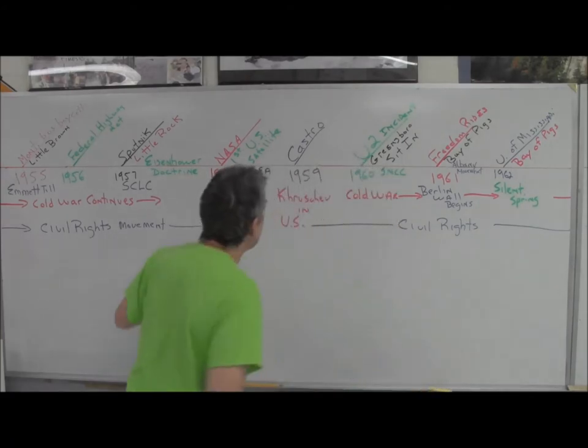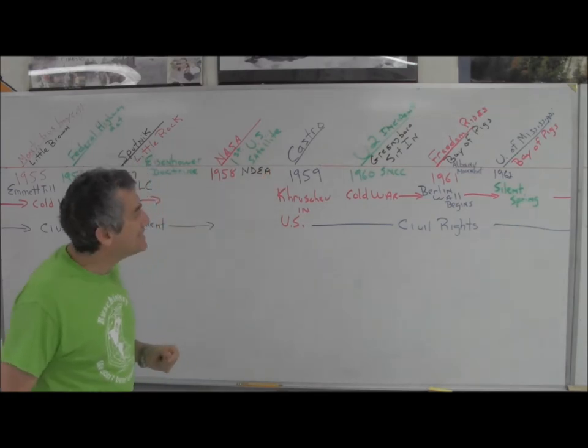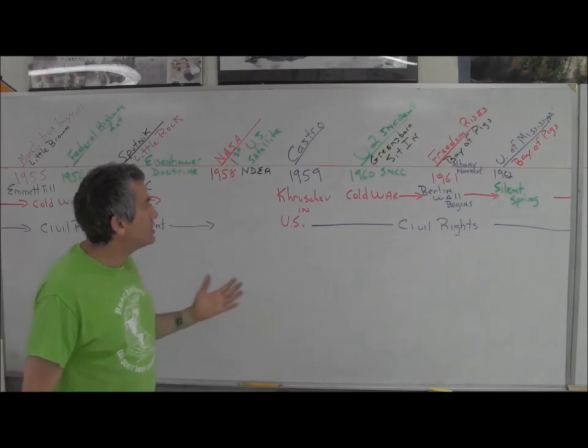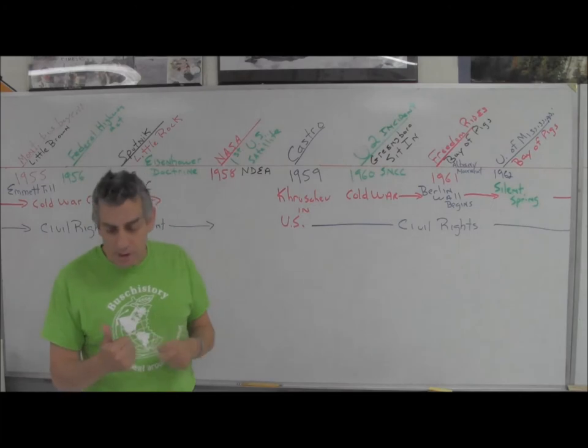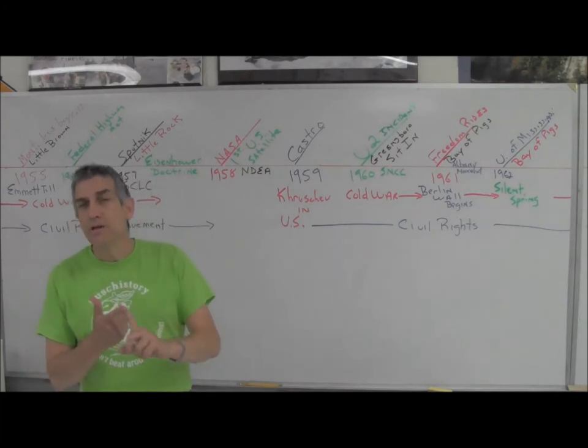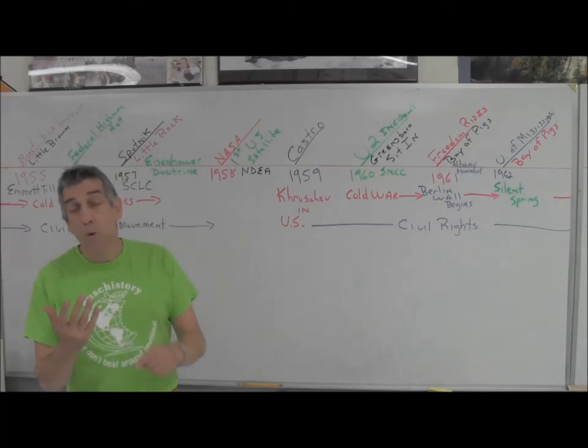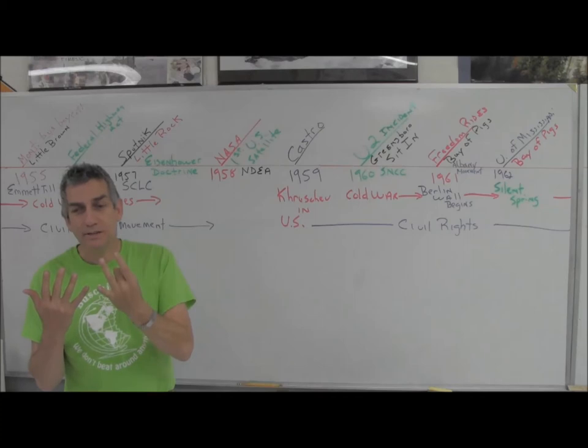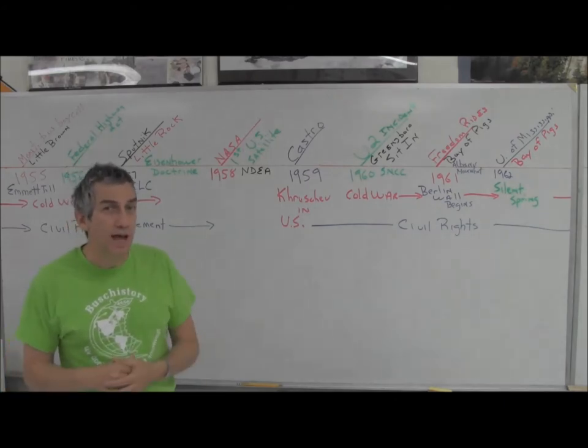In 1959, we're going to get Castro coming to power in Cuba, displacing the Batista government. He comes to power when President Eisenhower is in office and he's going to be there through Kennedy, Johnson, Nixon, Ford, Carter, Reagan, Bush, Clinton, Bush Two, and into the Obama administration. Castro certainly is going to have the last laugh.